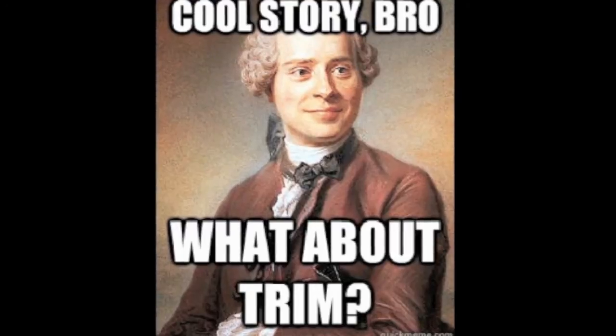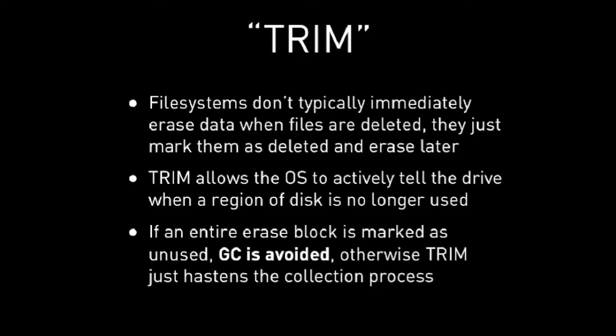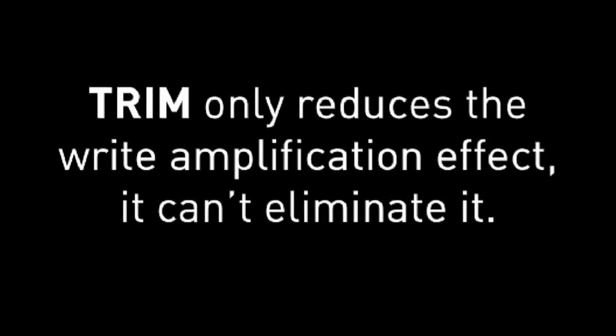Some of you are going to say: tell me about how it works with TRIM. TRIM is a command — file systems don't actually erase data when you delete a file, they just mark it as deleted. TRIM basically allows the OS and file system to indicate in a very lightweight manner that a region of the disk is no longer used, rather than going through an expensive erase process. It's just a hint that says 'I no longer need this data.' If the entire erase block is marked as unused, we can avoid the garbage collection compaction process because there's no fragmentation. Otherwise TRIM will speed things up a little. But TRIM can only reduce the effect of write amplification — it can't eliminate it.